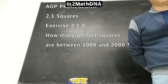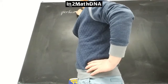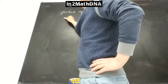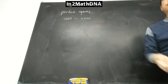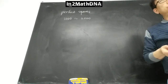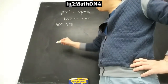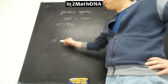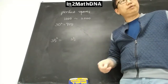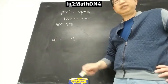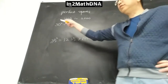Now find the perfect squares between 1000 and 2000. First try to find something close to 1000. Try 30 squared which is 900, then 35 squared: last two digits are 25, first digits are 3 times 4 equals 12, giving 1225. That's already greater than 1000.